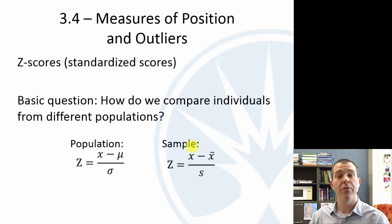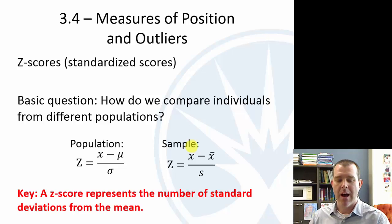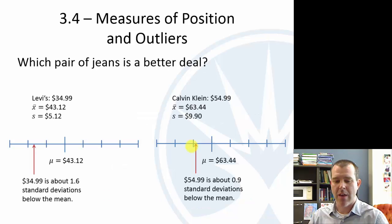So the formulas here for the z-score, basically you take the observation and see how far it is from the mean and then divide by the standard deviation, whether it's population or sample. We'll call those both z-scores. They're not technically both z-scores, but they're very similar. So the key here, and this is really, really, really important, I'm going to test you on this more than once and expect you to really understand this about what the z-score represents, that it's the number of standard deviations from the mean. So if we go back to that graphic, that Levi's jean is 1.6 standard deviations below the mean. That's the z-score. And the Calvin Klein is 0.9 below the mean. That's the z-score.